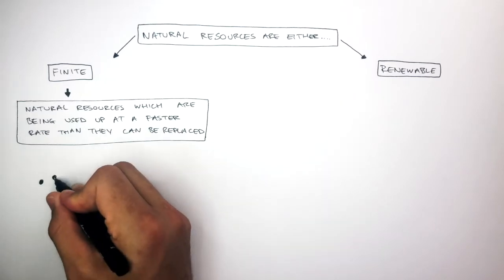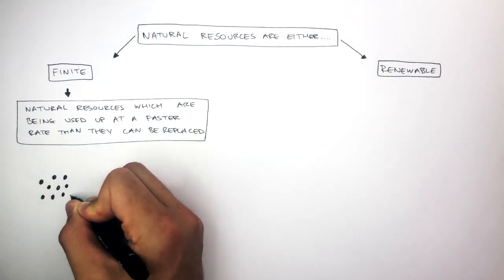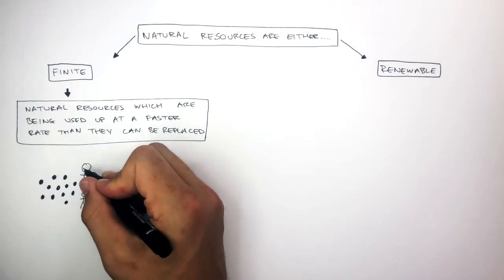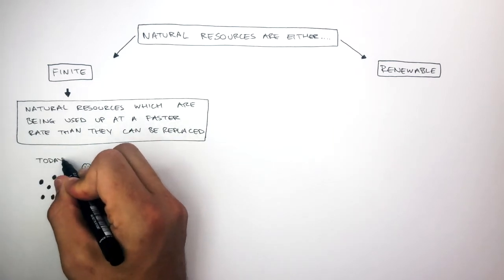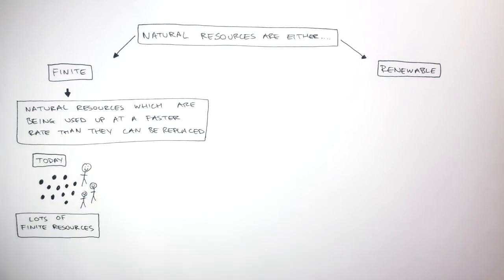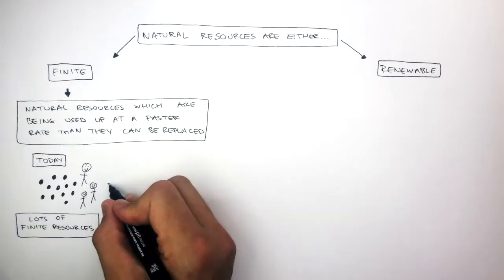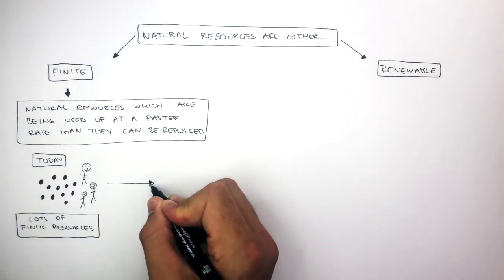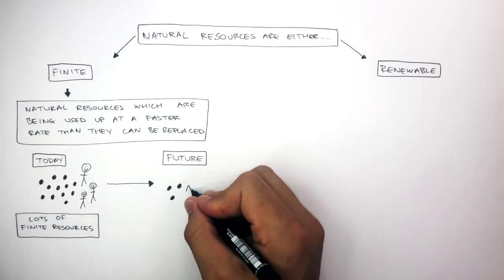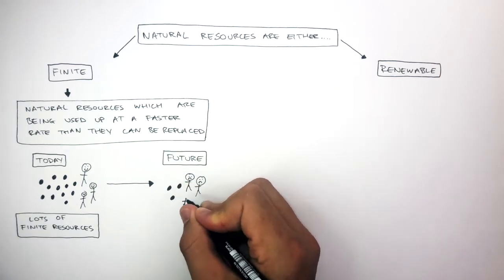So let's say these black circles represent lots of finite resources, and these stick people represent society. So in today's world, we have lots of finite resources. So society is happy, as we can make lots of things from these finite resources. But then as time passes, and we're now in the future, we have a lot less finite resources. So society is not as happy.